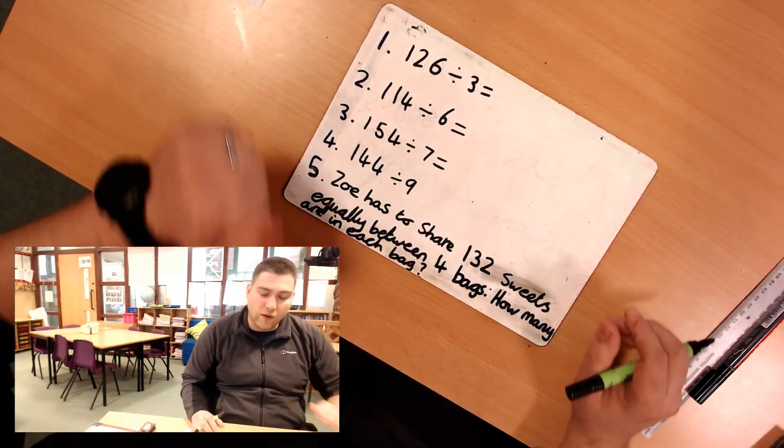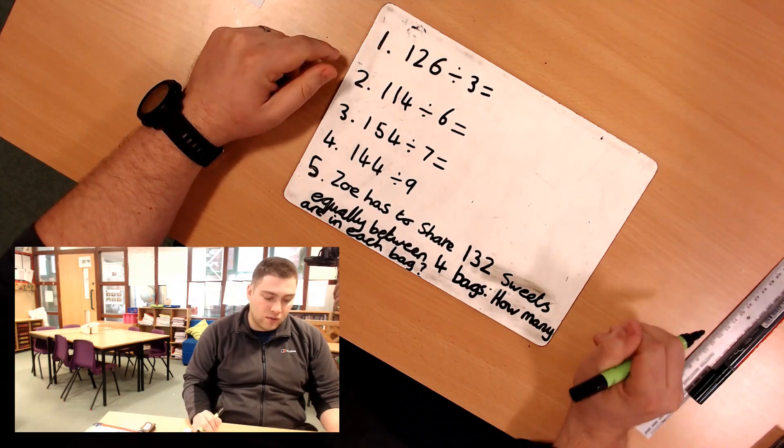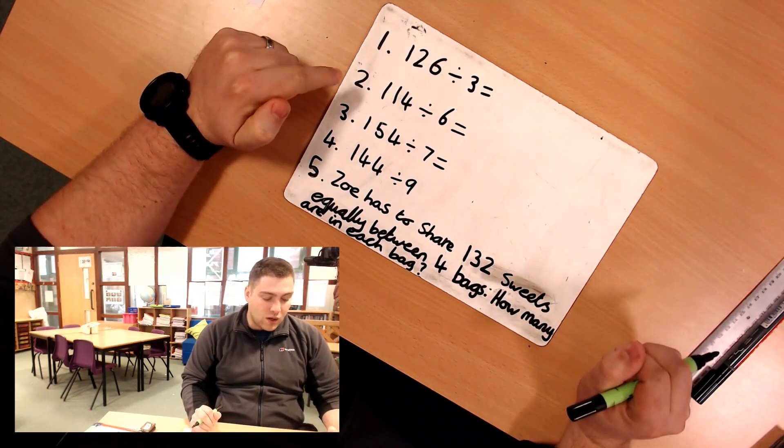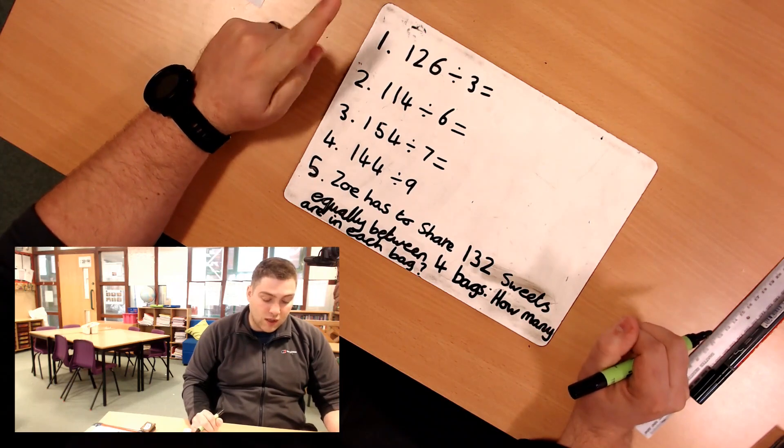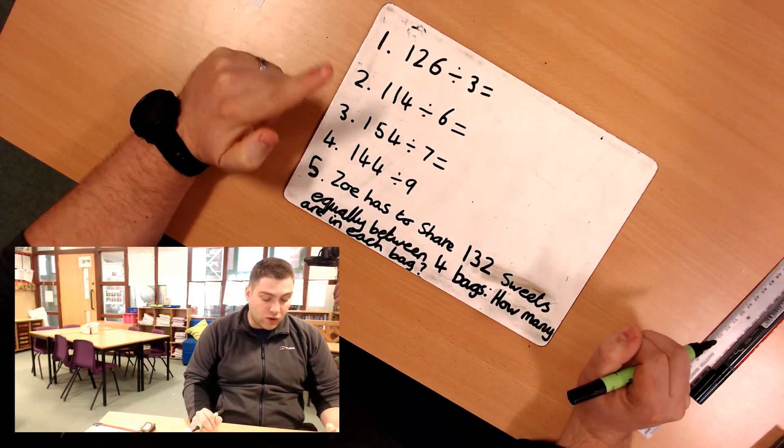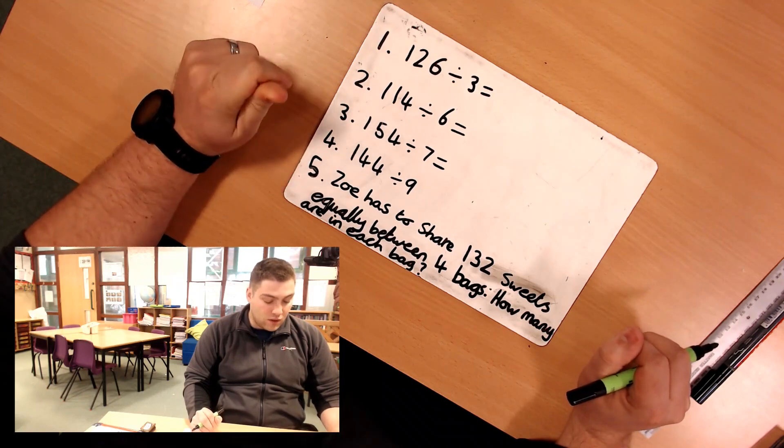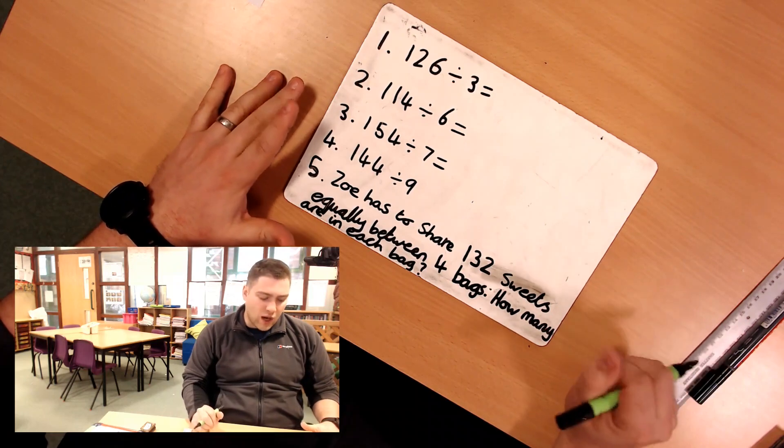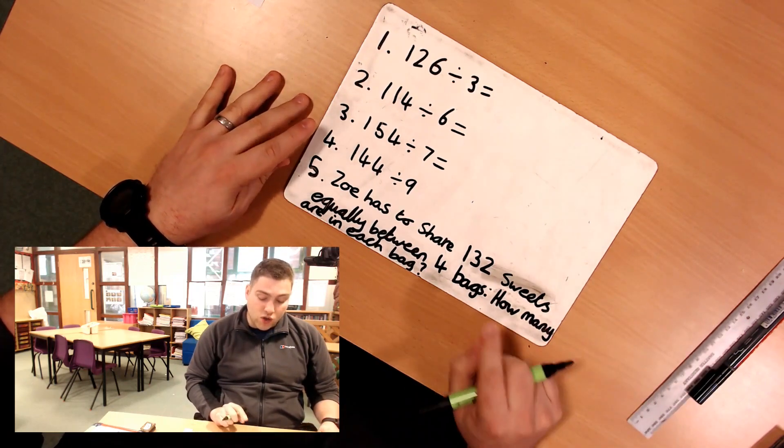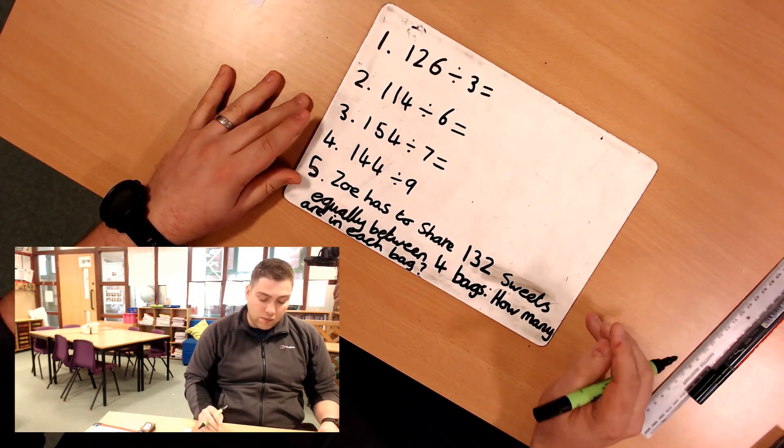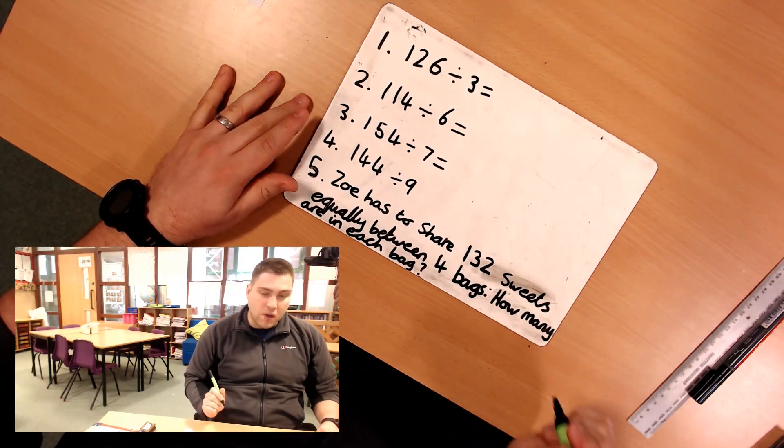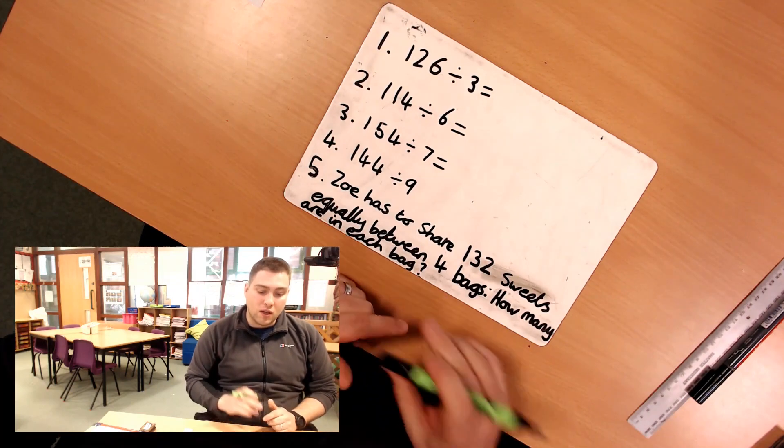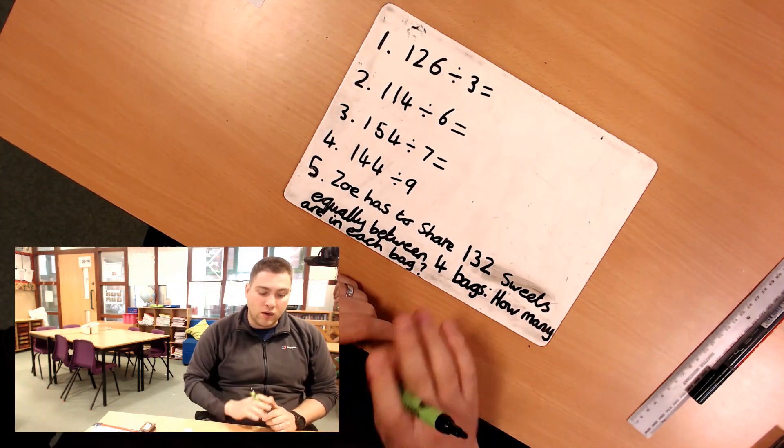Okay, there's 5 questions for you to try yourself using the method I've just shown you. Question 1, 126 divided by 3. Question 2 is 114 divided by 6. Question 3, 154 divided by 7. Question 4, 144 divided by 9. And question 5 is a little bit of a challenge. Zoe has to share 132 sweets equally between 4 bags. How many are in each bag? Pause the video here. Use the method I've just shown you with the place value grid and partitioning. And I'll give you the answers in a minute.